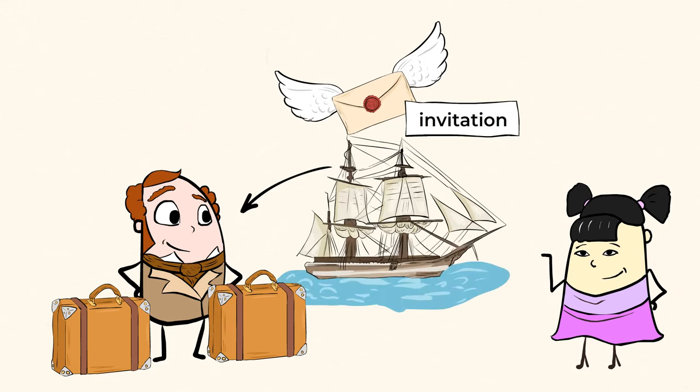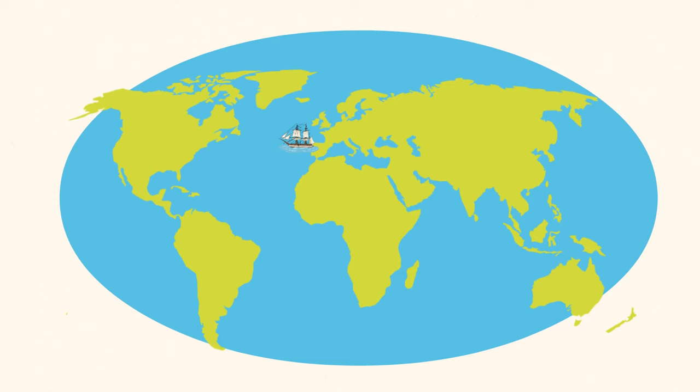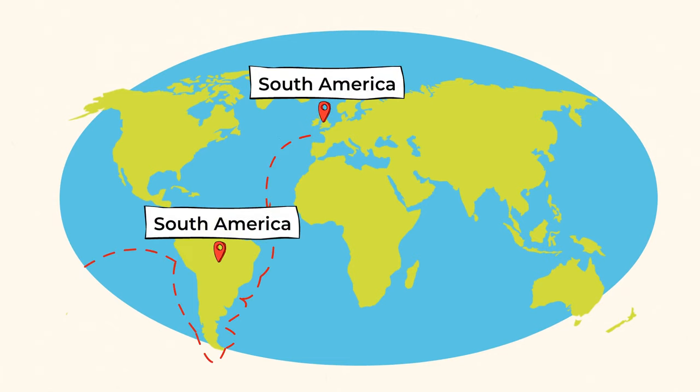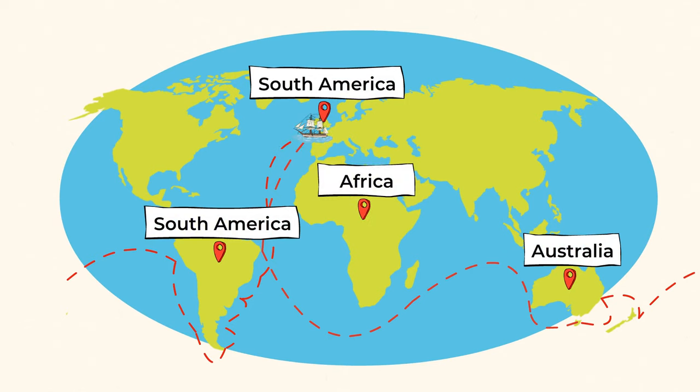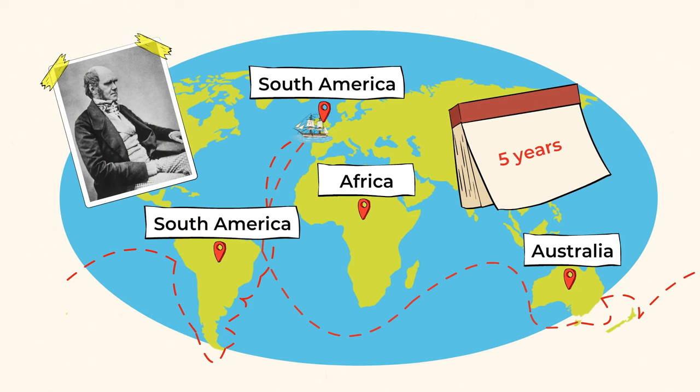became part of the crew on a ship named HMS Beagle. The ship started its voyage from Britain and sailed around South America, Australia, and Africa on its way back to Britain to map the continent's coastal line. That trip lasted five years. And these five years were probably the most important ones in Darwin's life.